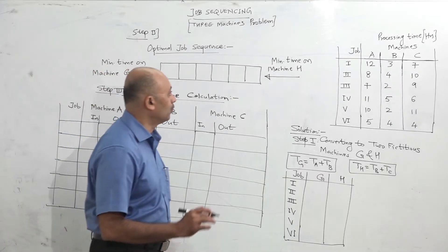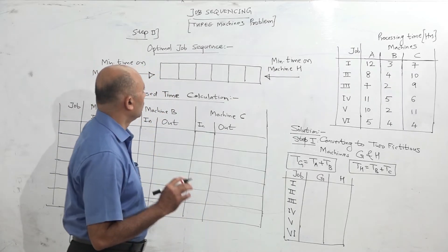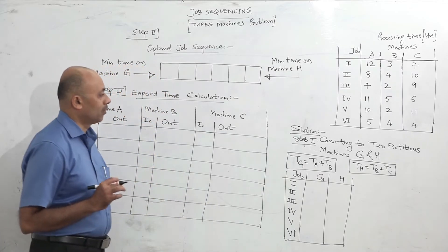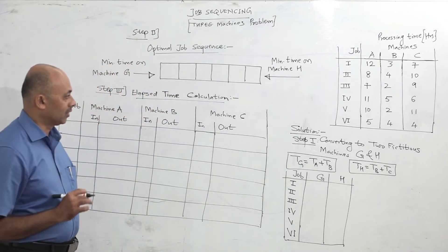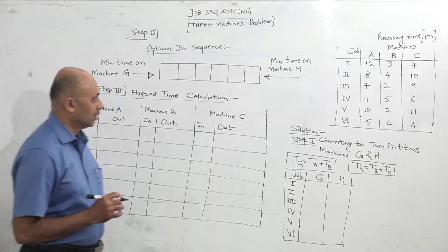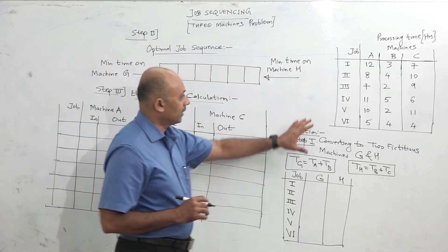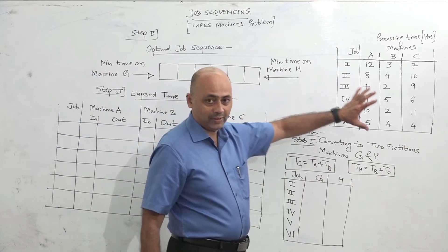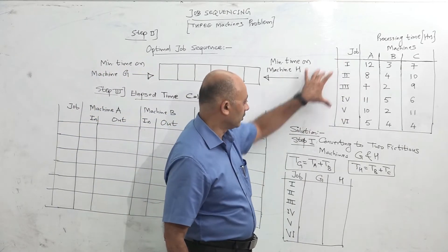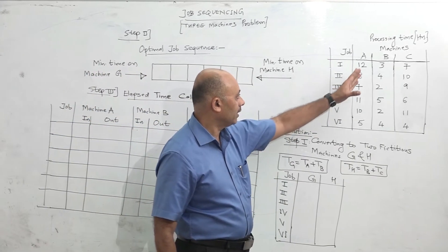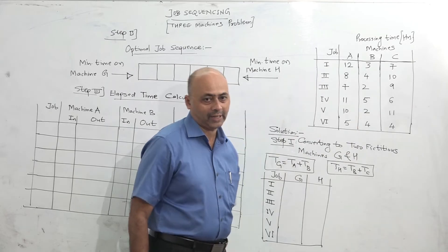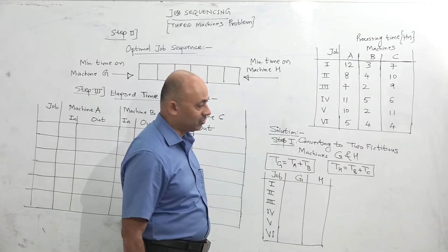Today we will see how to solve a 3-machines problem in job sequencing. As you can see, the data is given: 6 jobs are there and processing time is given on 3 machines.